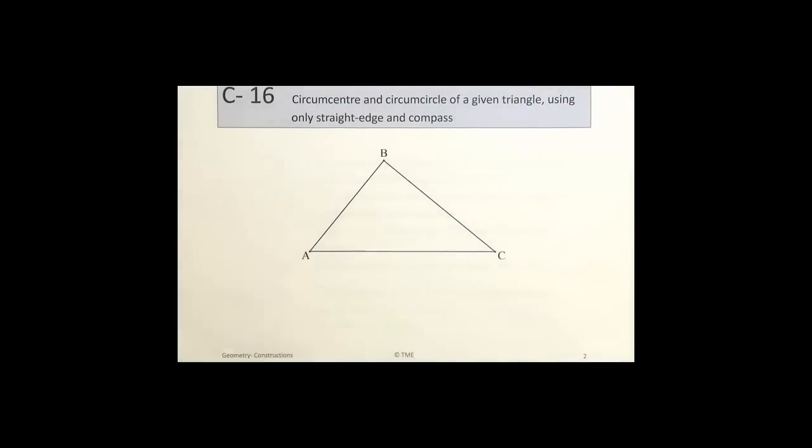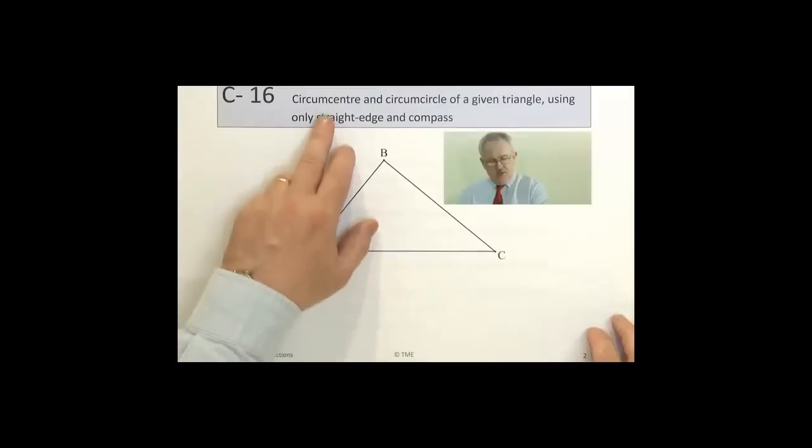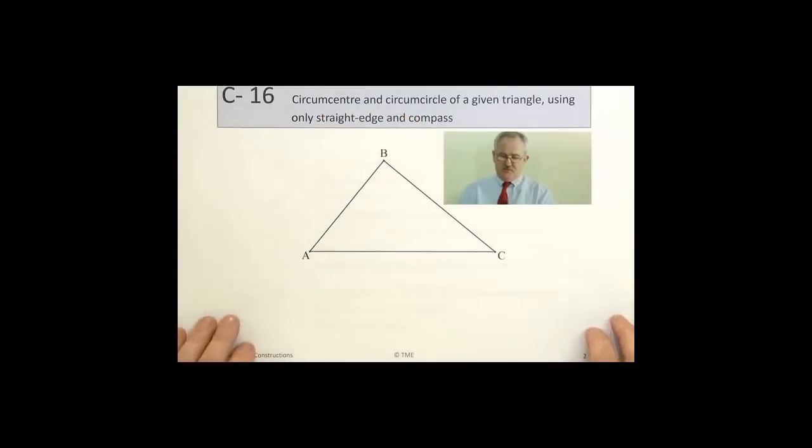So we're going to start now with construction 16. This is to identify the circumcenter and circumcircle of a given triangle using only straight edge and compass.